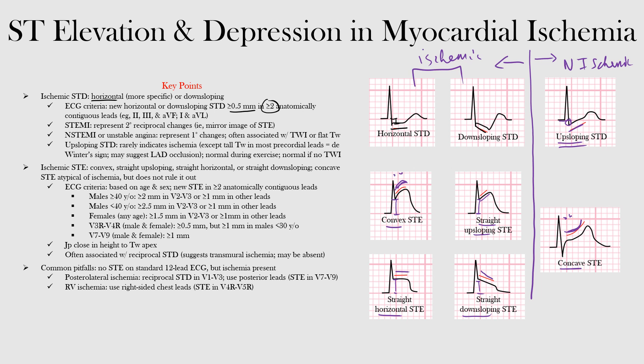For right-sided precordial leads V3R and V4R, ischemic ST elevation in men and women is ≥0.5 mm, except in men under 30 years of age in whom it is ≥1 mm. For posterior leads V7 through V9, ischemic ST elevation in men and women is considered ≥1 mm. All of these criteria are listed for reference. Note that ST elevation requirements are greater in leads V2 and V3 than any other leads because concave ST elevation is very common in the general population, especially in young men.